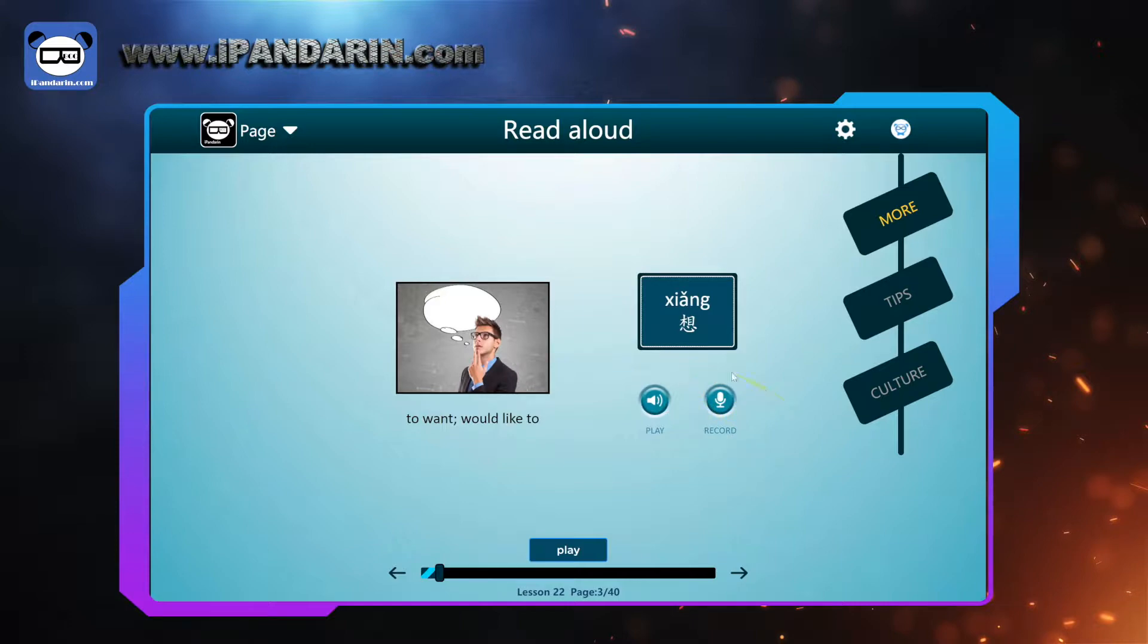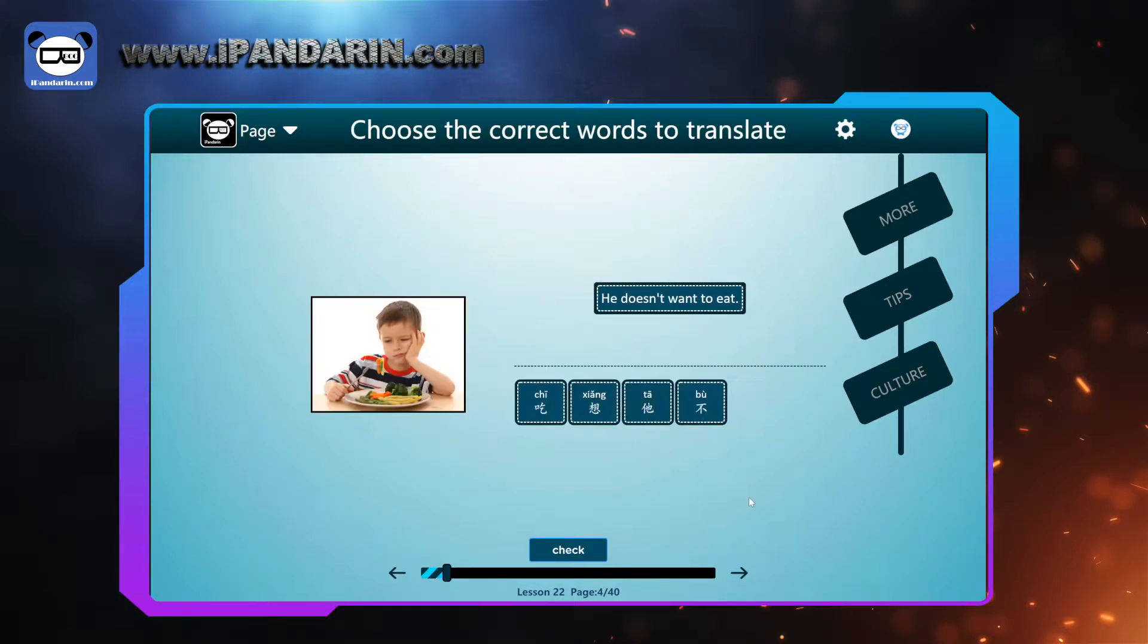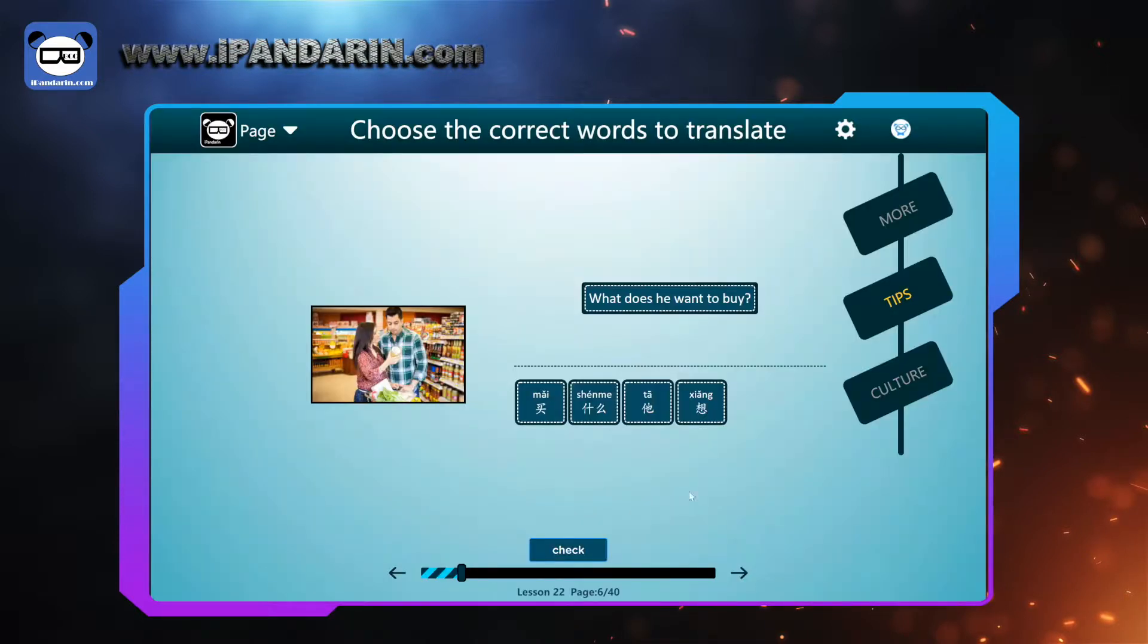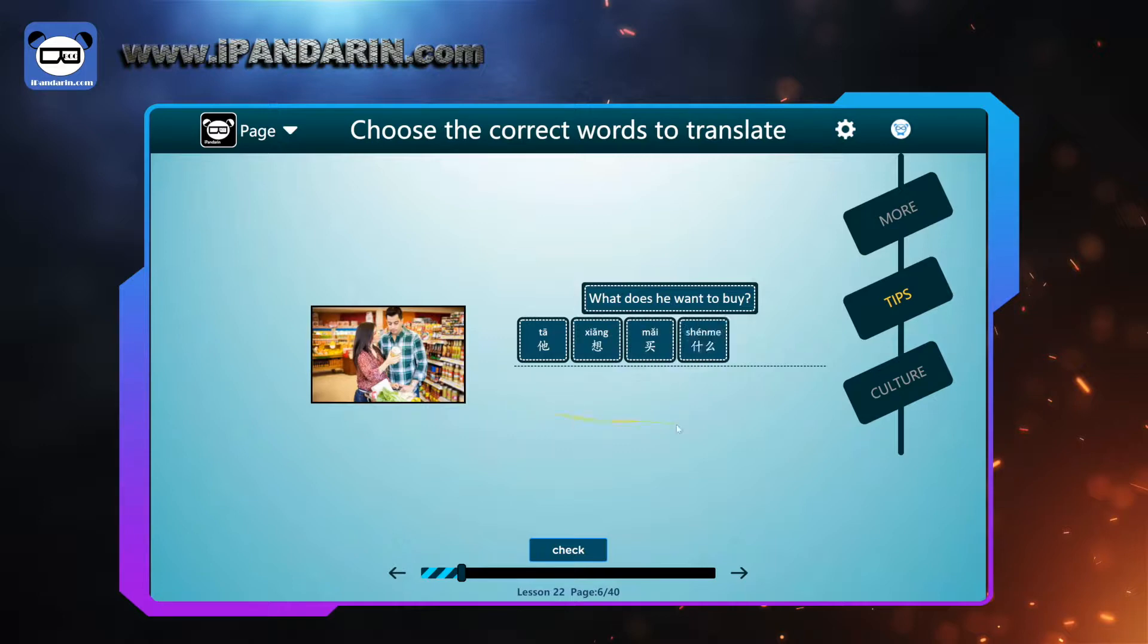Subject verb object. 不想吃. Negative adverb in front of 想. 他不想吃. What does he want to buy? Description sentence. 他想买什么. 什么. Put what in the end. 他想买什么. What does he want to buy?